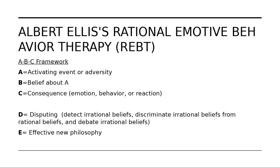REBT uses an ABC framework — different from the antecedents-behaviors-consequences ABC discussed previously. Here, A refers to an activating event or adversity — something happens. What follows from that event is B, your client's belief about the activating event. That belief about the event then leads to some type of C, consequence — which could be an emotion, a behavior, or some type of reaction.